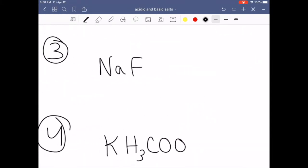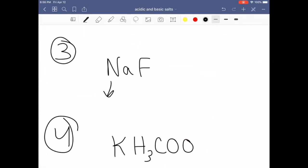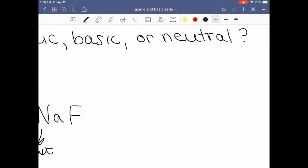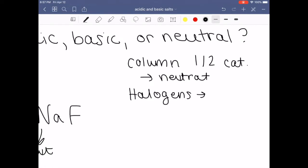All right, now let's go up to this example. Sodium, we know, is neutral. I'm going to give my students a big hint here. Any of the column one or two cations will be neutral. Any of the alkali metals or the alkali earth metals will be neutral in their salt. So they will be neutral.